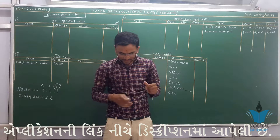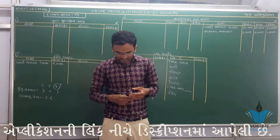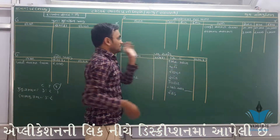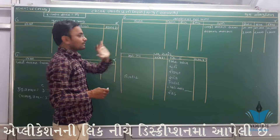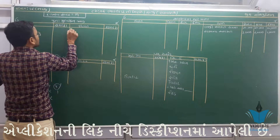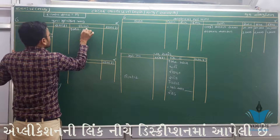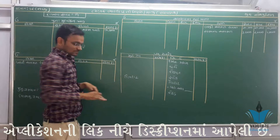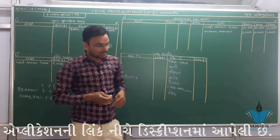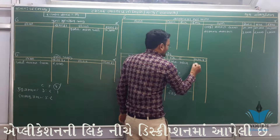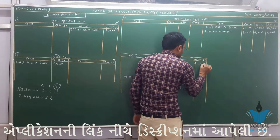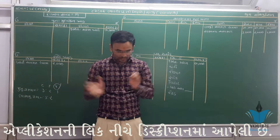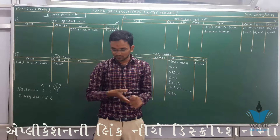20 ટકા વધારવાની છે, એટલે 50,000 × 20% = 10,000 રૂપિયા. જમીન-મકાનની કિંમતમાં વધારો, એટલે ફાયદો. ફાયદો છે, તો પુન:મૂલ્યાંકન ખાતાની ઉધાર બાજુ ઘટાડો અને જમીન-મકાન ખાતાની જમાં.